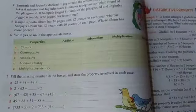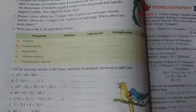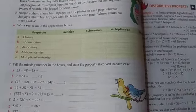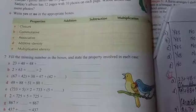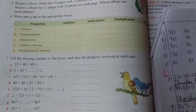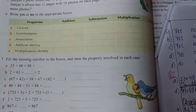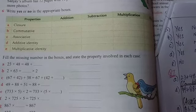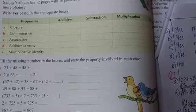Now see question number 6. Write yes or no. Closure property holds true for only addition and multiplication, right? So only addition and multiplication, right? Both other two are wrong. Now the second one is commutative property. That will also hold true for only addition and multiplication. Then comes the associative property. That is also true for only addition and multiplication.